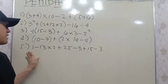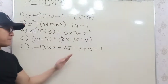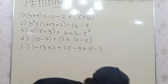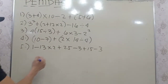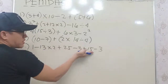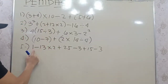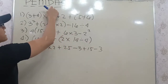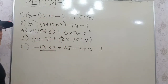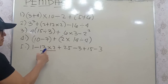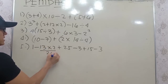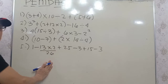Let's start with number 5. First, let's check — are there parentheses or exponents? None. And then, multiplication and division — is there any? Yes, there is. So we perform that first. This becomes 13 times 2, which is 26.